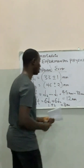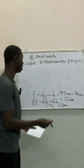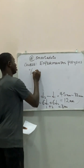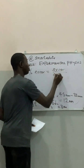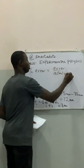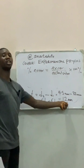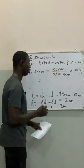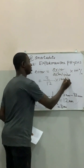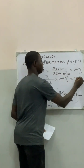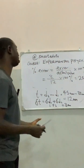We can now calculate the percentage error. The percentage error in the thickness of the pipe is given by the formula: error over actual value, multiplied by 100%. This gives us 3 over 12, multiplied by 100%, which equals 25%. So 25% is the percentage error associated with the thickness of that pipe.